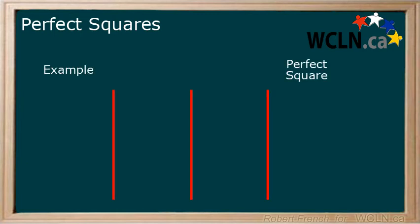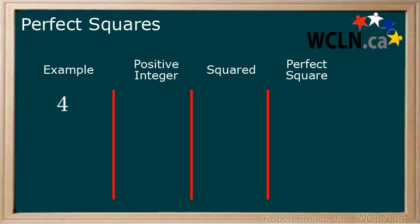Now let's try some examples. I'm going to show examples and I want you to answer if they are perfect squares or not. We will look at two conditions — both need to be true for it to be a perfect square: Is the number a positive integer? Is there a positive integer that can be squared to equal the possible perfect square? I will leave a few seconds after each one for you to decide. 4 — 4 is a positive integer and 2 squared equals 4. Yes, 4 is a perfect square.